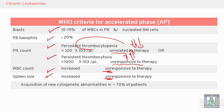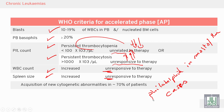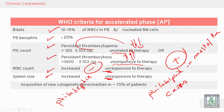Acquisition of new cytogenetic abnormalities occurs in more than 70% of patients. In the chronic phase, most cases are Philadelphia chromosome positive; a few are Philadelphia negative. Acquisition of additional cytogenetic abnormalities beyond the Philadelphia chromosome leads to the diagnosis of the accelerated phase.